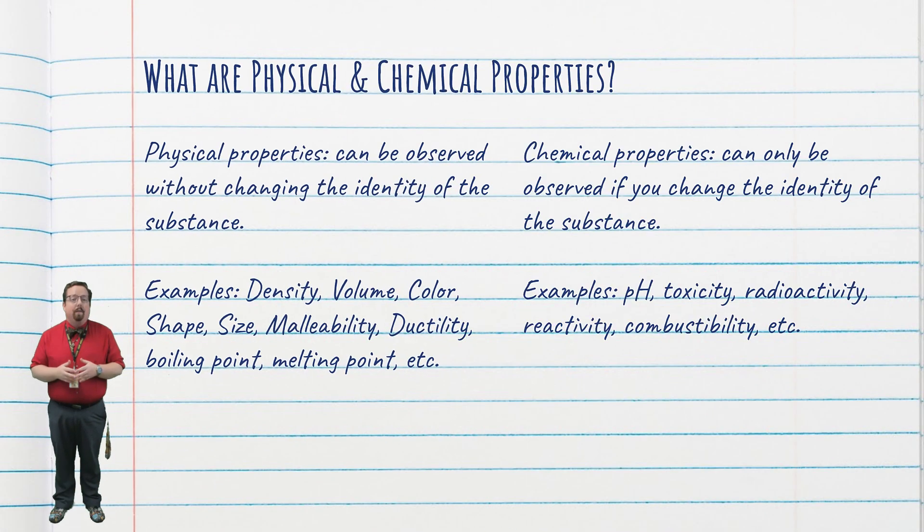So first, what are physical and chemical properties? Physical properties are properties that can be observed without changing the identity of the substance you're working with. At most, you might have to take the substance through a physical change in order to observe a physical property. Some examples of physical properties are density, volume, mass, color, shape, size, malleability, ductility, boiling point, and melting point.